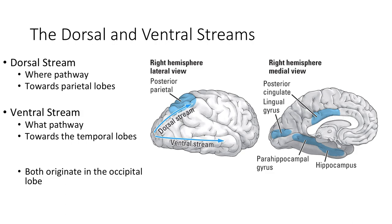Historically, we have two streams for processing spatial information. The dorsal stream is more on top, and the ventral stream is towards the bottom. Both streams originate in the visual cortex, or occipital lobe. The ventral stream projects through the temporal lobes and is important for identifying objects — it is called the 'what pathway.' The dorsal stream projects through the parietal lobes and guides movement — it is called the 'where pathway.' All of this information eventually comes together in the prefrontal cortex, where it is combined.